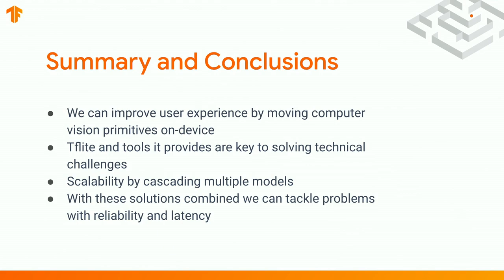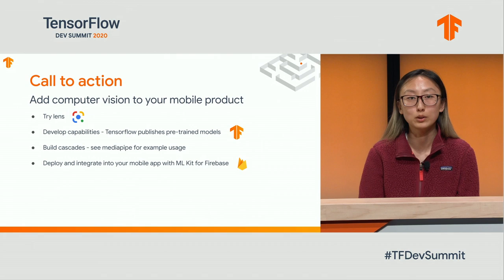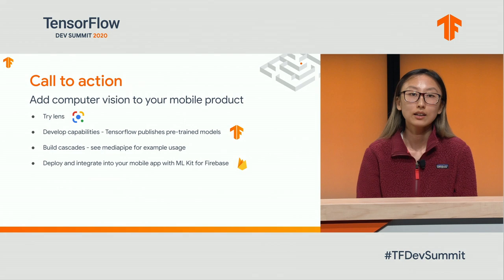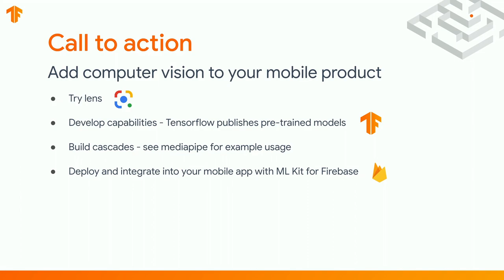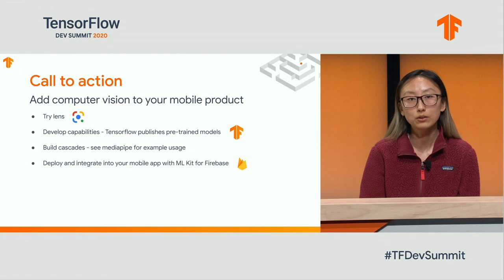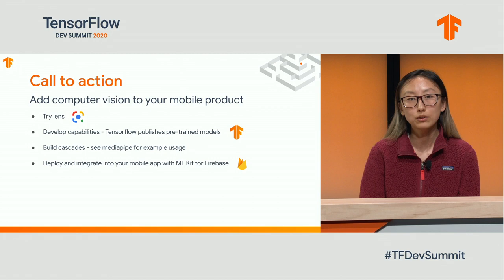In summary, Lens can help improve the user experience by moving computer vision on-device. TF Lite and other TensorFlow tools are critical in enabling this vision. We can rely on cascading multiple models in order to scale to many device types and tackle reliability and latency. You too can add computer vision to your mobile product — try Lens to get some inspiration, check out the pre-trained mobile models that TensorFlow publishes, follow a MediaPipe tutorial to build your own custom cascade, or build and deploy ML models into your mobile app using ML Kit for Firebase. Thank you.